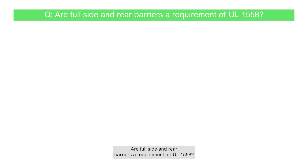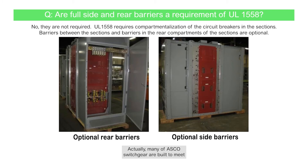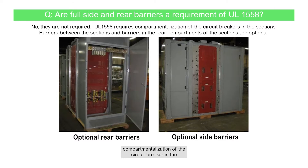Are full side and rear barriers a requirement for UL1558? Actually, many of ASCO switchgear are built to meet the UL1558 requirements. The UL1558 requirements call for compartmentalization of the circuit breaker in the sections, but it is not required to have side barriers between sections or rear barriers at the rear of the sections.